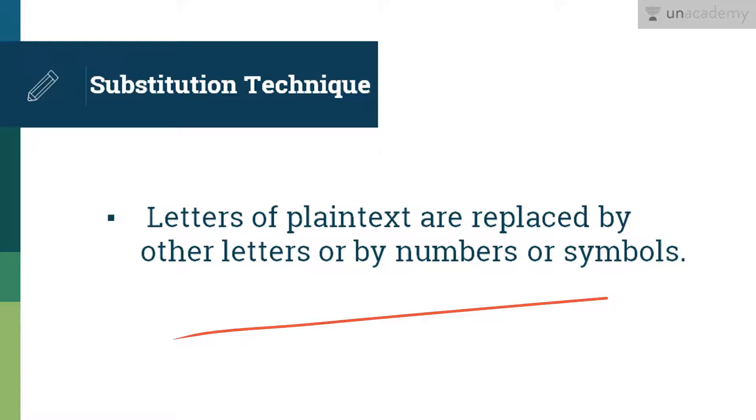So if the plain text is viewed as a sequence of bits, then substitution involves replacing your plain text bit patterns with the cipher text bit patterns.